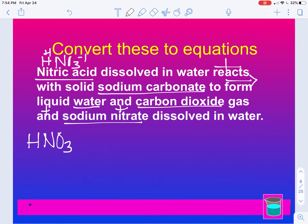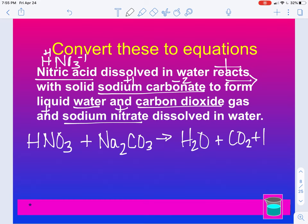So we have nitric acid reacts. That's a plus. Sodium carbonate. Well, sodium is Na. Carbonate is CO₃. Carbonate is a minus two. Sodium is a plus one. So we're going to drop and swap. So this is going to be Na₂CO₃. We have water, which we know is H₂O. We have carbon dioxide, which is CO₂. And then we have sodium nitrate, which is NaNO₃.